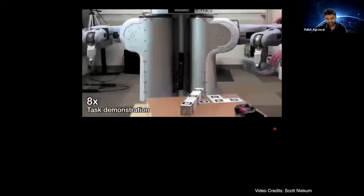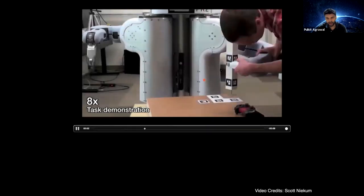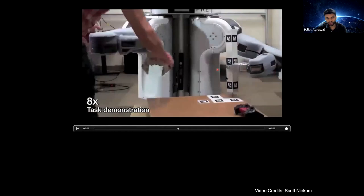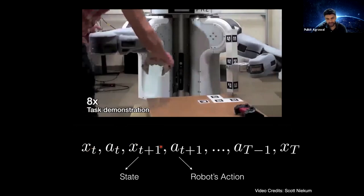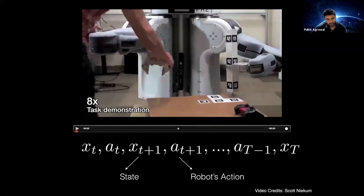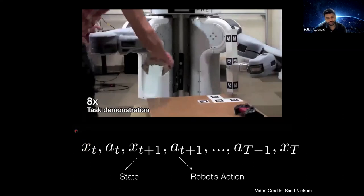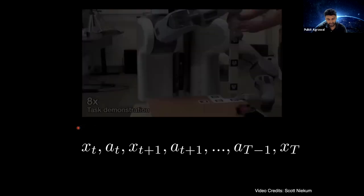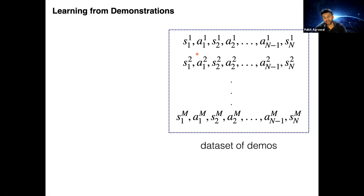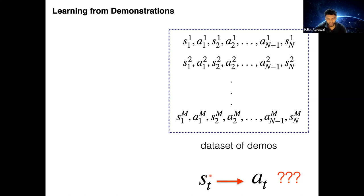Similarly, consider a task where a robot needs to arrange a block. A human moves the robot and the robot observes the environment. What we have access to is the state of the world x and the robot's actions. We want to learn a mapping from x to action a, because if we can do that the robot can, given a state, execute the desired action. Formally, we may have n demonstrations of a task, each with n time steps, and given a state the robot should output an action.